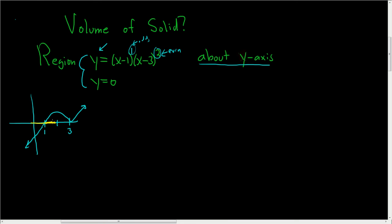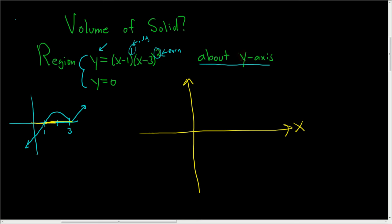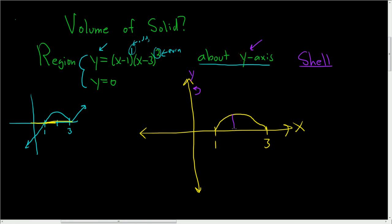And the line y equals 0 is this piece right here. Let's go ahead and draw this picture a little bit bigger. So there's x, and there's y. Here's 1 and here's 3. It looks like we care about this piece here, and we're spinning this about the y-axis. Let's go ahead and use the shell method. Whenever you use the shell method, your rectangles are always parallel to the axis of revolution. So in this case, the y-axis is the axis of revolution, and when we draw our rectangle, the only way to draw it is like this.